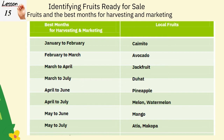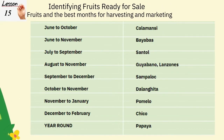Table 1 shows fruits and the best months for harvesting and marketing: January to February — caimito; February to March — avocado; March to April — jackfruit; March to July — duhat; April to June — pineapple; April to July — melon, watermelon; May to June — mango; May to July — atis, macopa; June to October — calamansi; June to November — bayabas; July to September — santol; August to November — guayabano; September to December — sampaloc; October to November — dalandan; November to January — pomelo; December to February — chico; year-round — papaya.